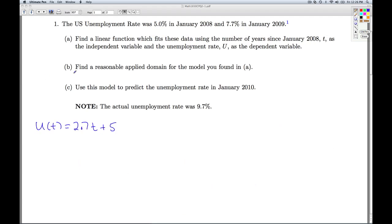Okay, in part b we're asked to find a reasonable applied domain for this model, for this function we found in a. So, since t is defined to be the number of years since January 2008, that tells us that one restriction we've got is t has to be bigger than or equal to 0.